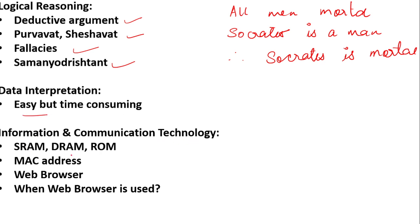In ICT, there was a question on different types of RAM. There are two types: SRAM (Static RAM) and DRAM (Dynamic RAM). The access time for SRAM is less and it is better in performance than DRAM. There was a question involving a combination of SRAM, DRAM, and ROM. There was also a question on MAC addresses — MAC stands for Media Access Control, and it tells you the physical address of any machine; this number is assigned to the system by the manufacturer. Then there was a question on web browsers, which are application software that help you connect to the internet.